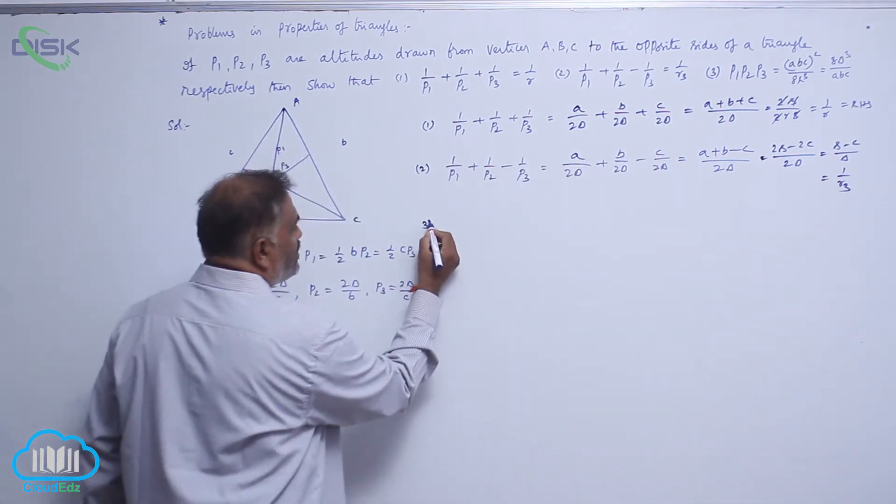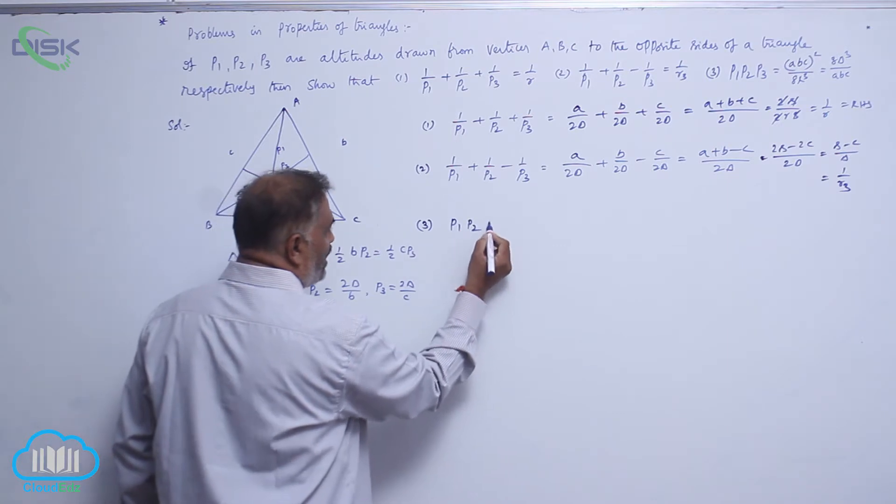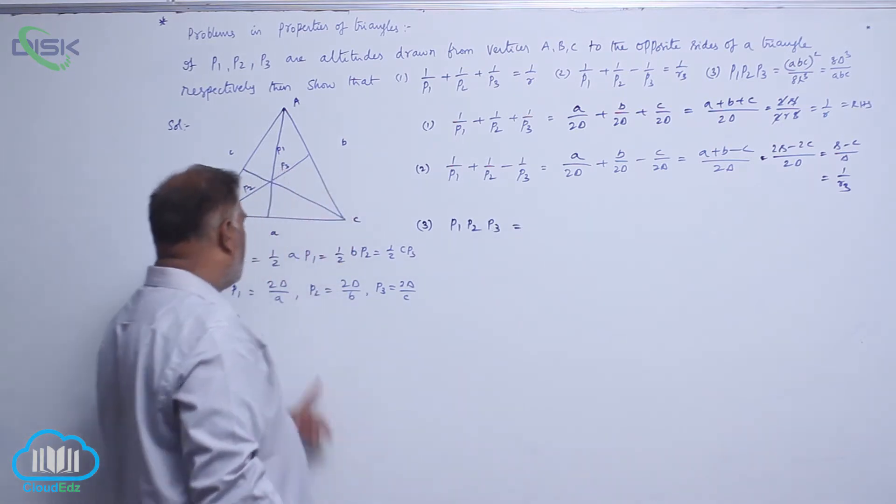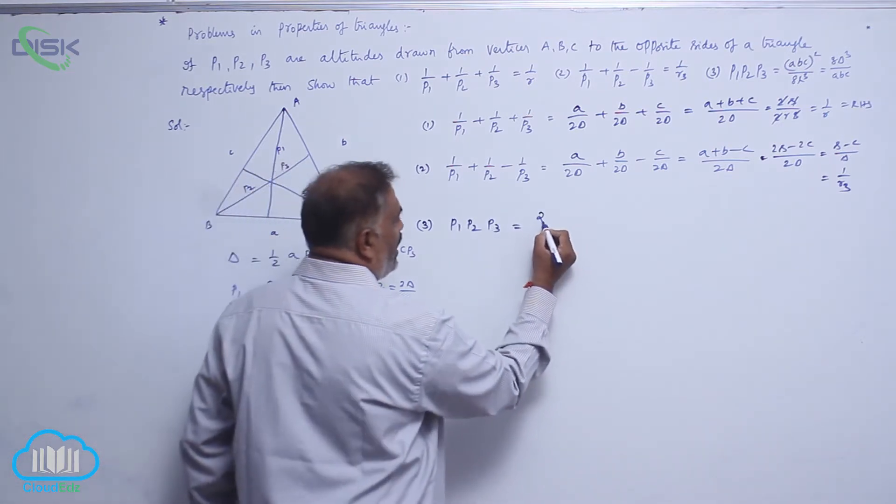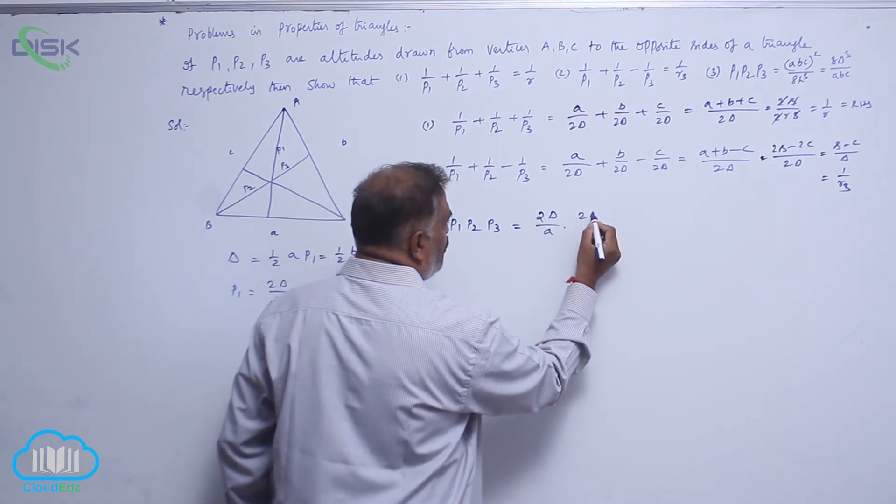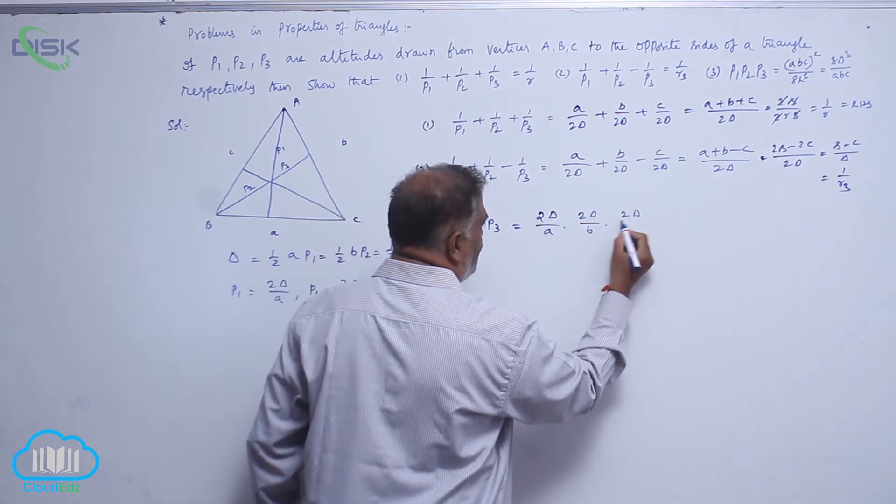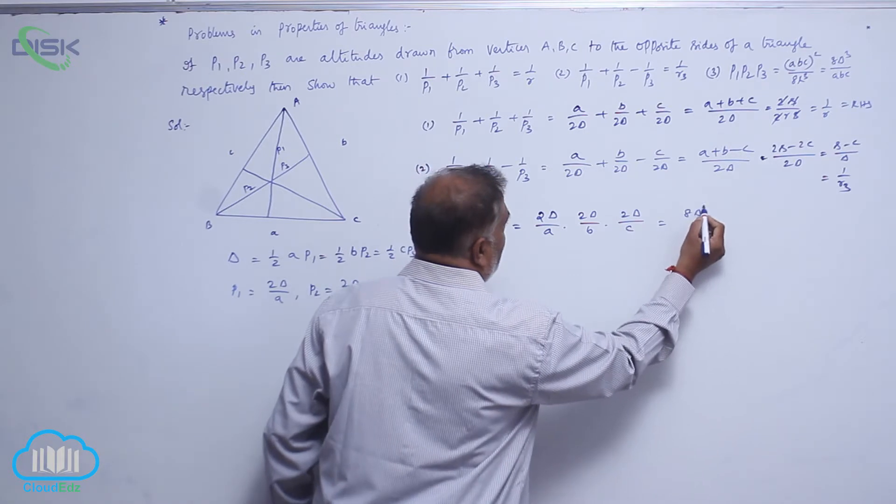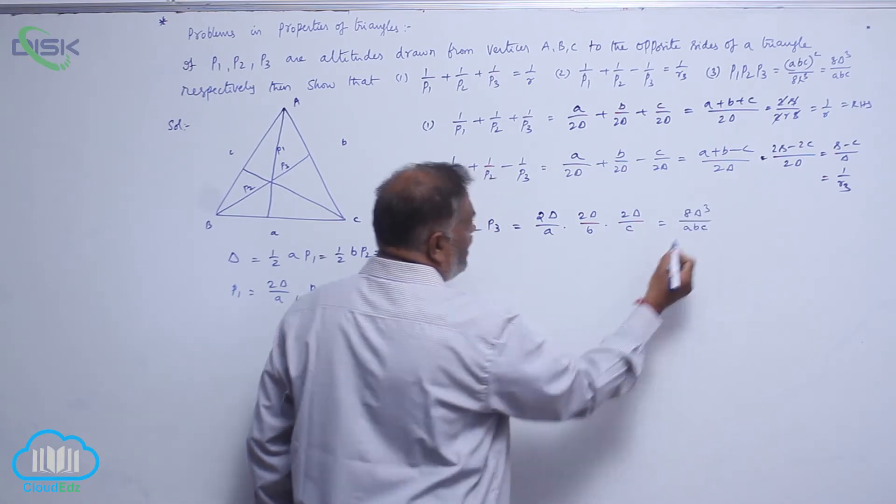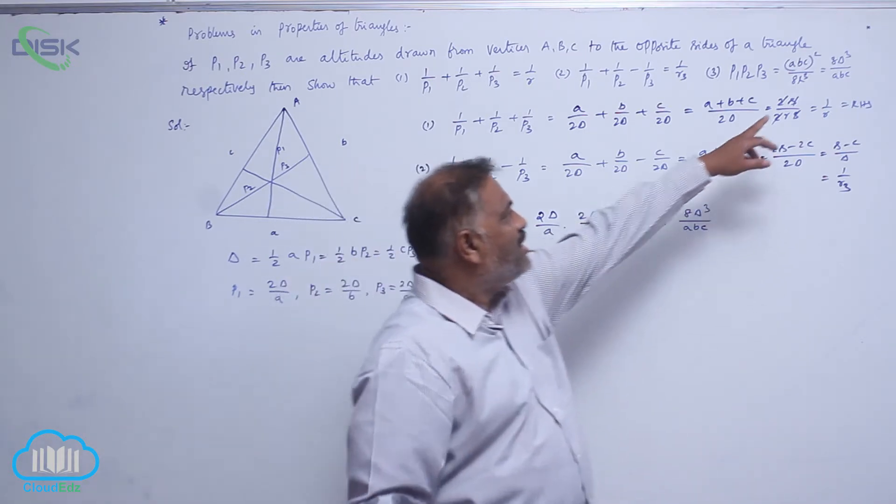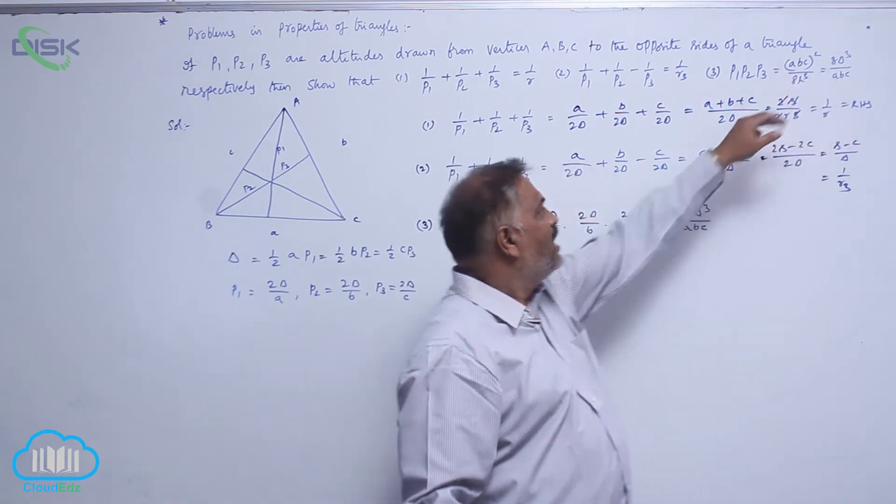Now, last result: P1, P2, P3. This is nothing but 2 delta by A into 2 delta by B into 2 delta by C. This is 8 delta cube by ABC. Already we got one result.